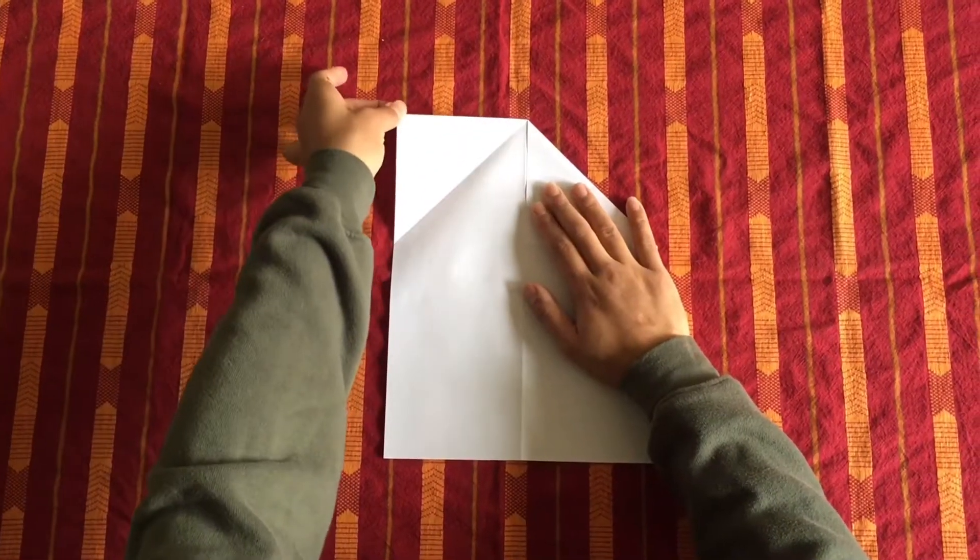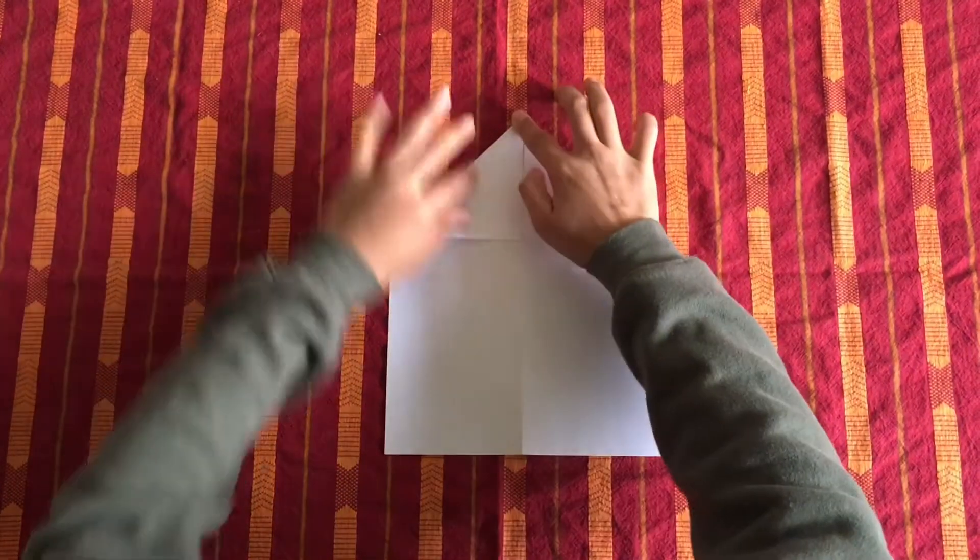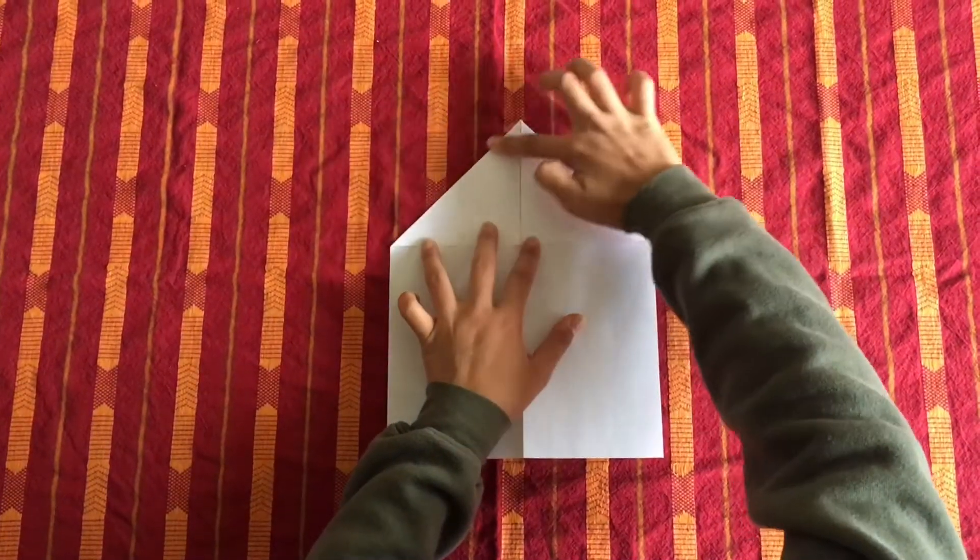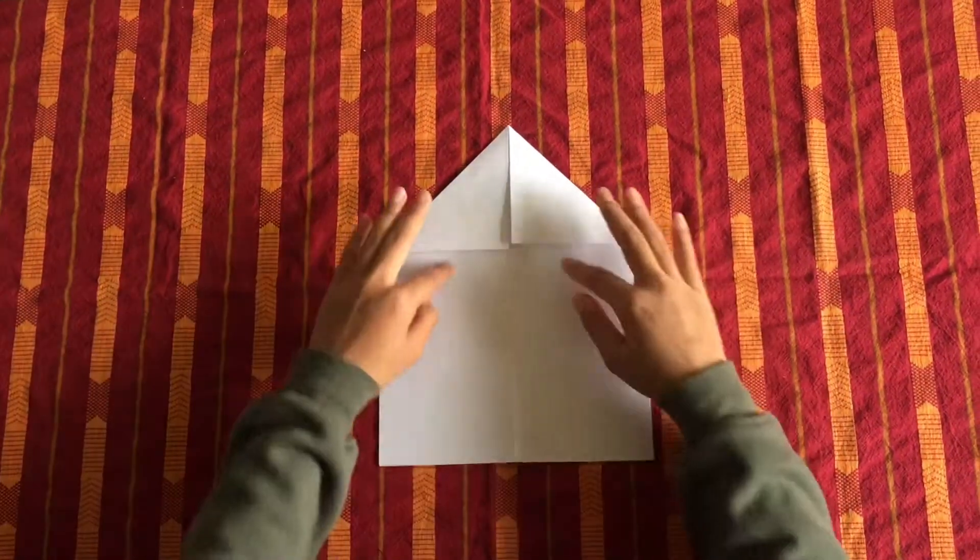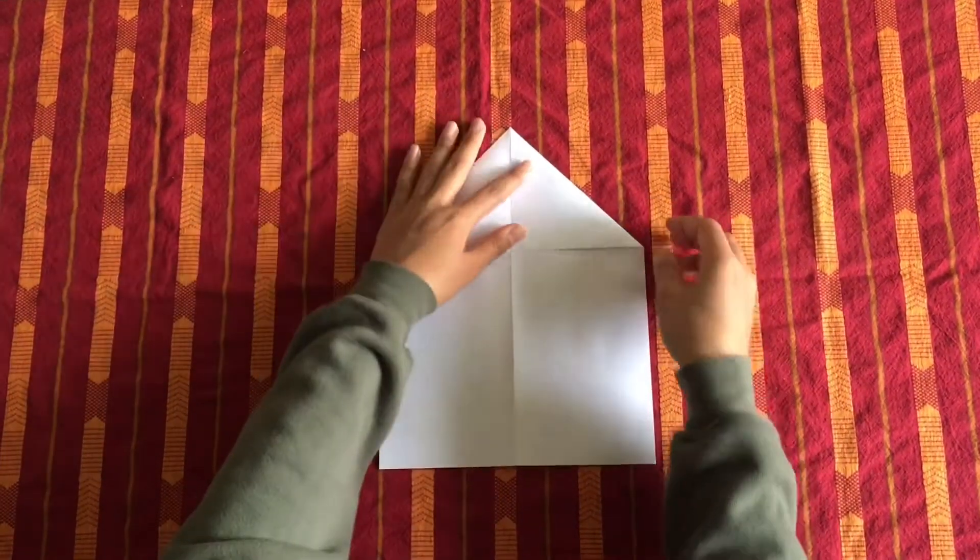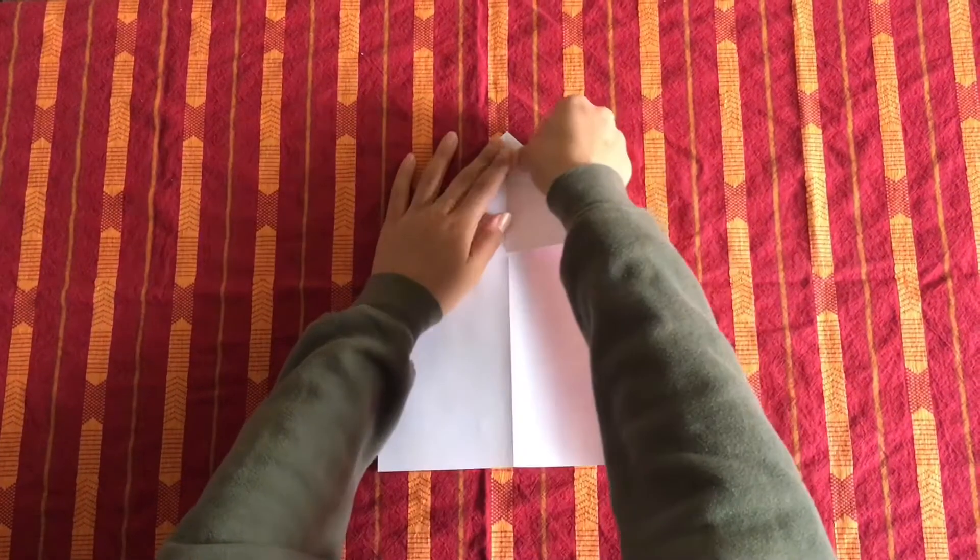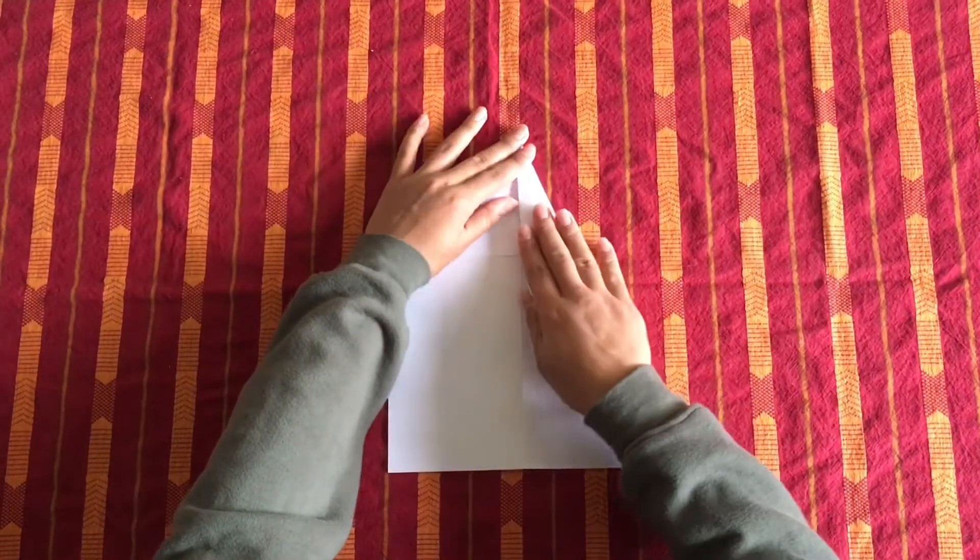You're going to take that top corner, that left hand corner, and fold it over. Then you're going to take one side and fold that side in half.